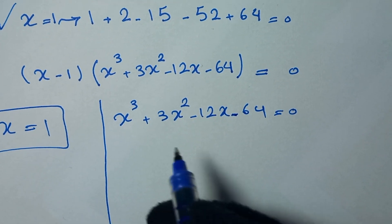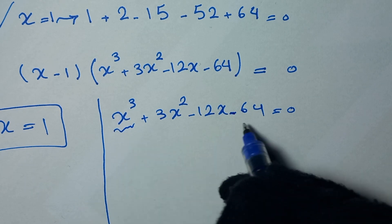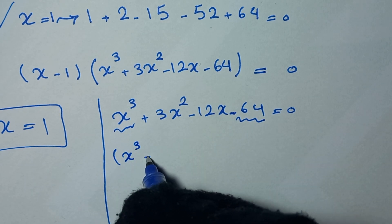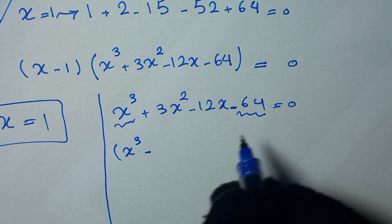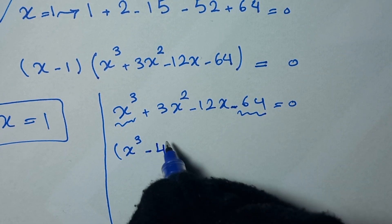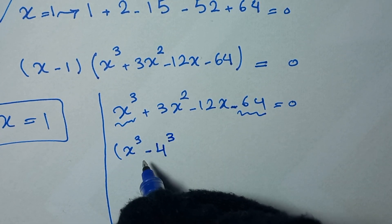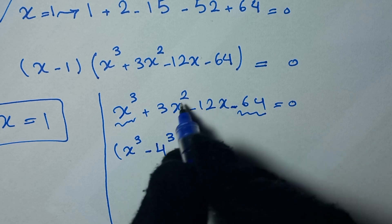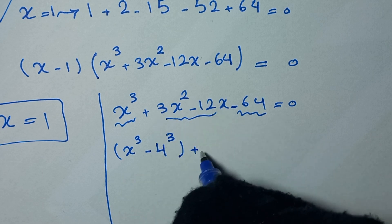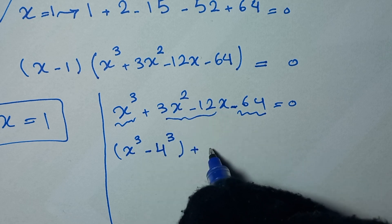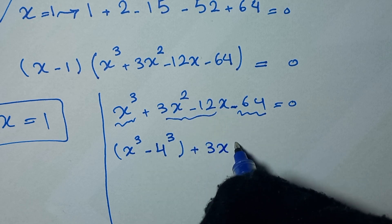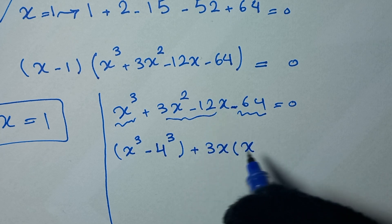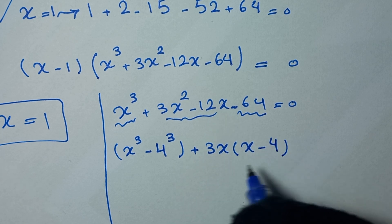In the next step, we take x cubed minus 64 together, where 64 can be written as 4 to the power of 3. And we take the remaining two parts together, factoring out 3x, giving 3x times x minus 4. So we have x cubed minus 4 cubed plus 3x times x minus 4 is equal to 0.